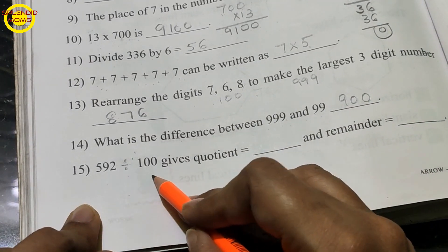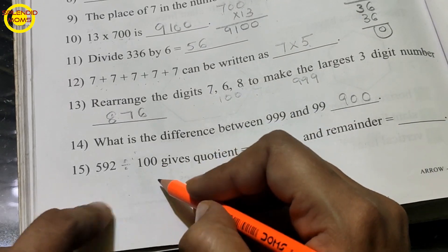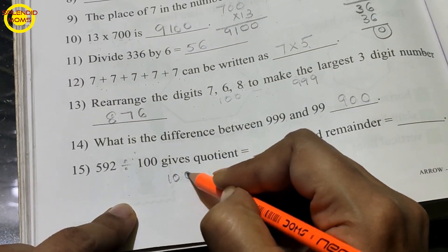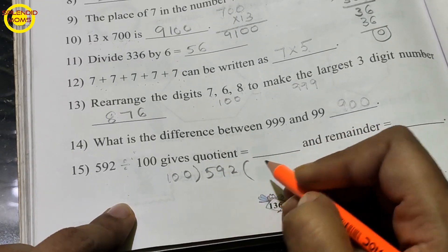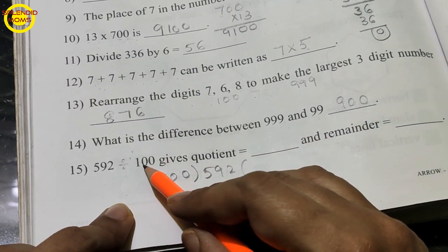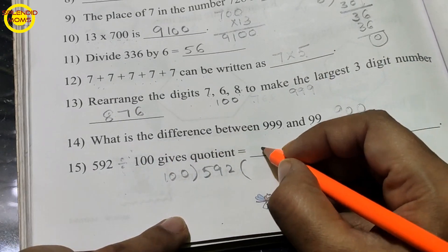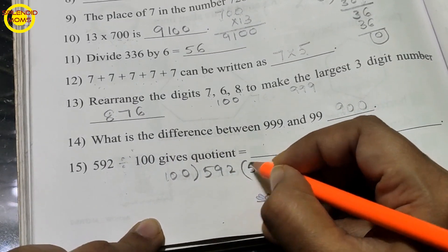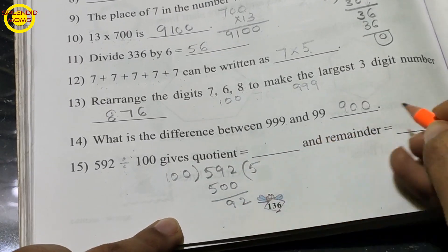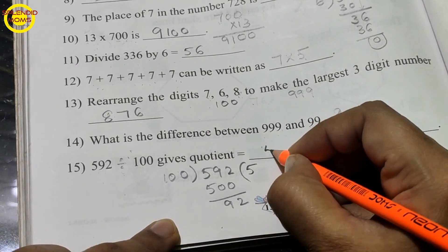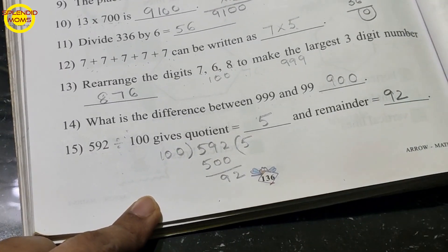592 divided by 100 — you need to find the quotient. In the 100s table, 592 fits 5 times making 500, with a remainder of 92. So 5 is the quotient and 92 is the remainder.